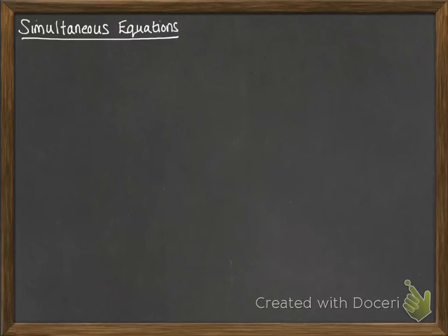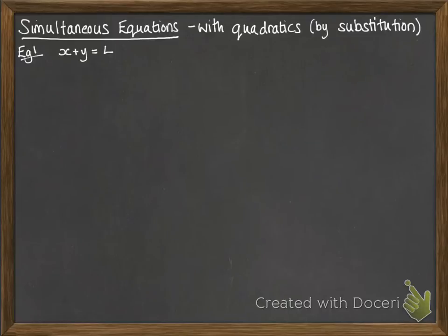On to simultaneous equations, specifically when it involves quadratics. This means we'll have to solve them by substitution. A lot of you will be used to doing it by elimination from IGCSE, but once you involve a quadratic, we need to use substitution. Here's an example. The fact that we've got a squared in there means we need to use substitution.